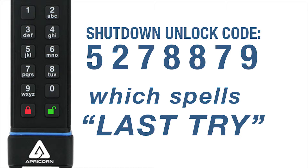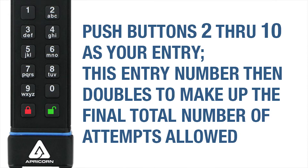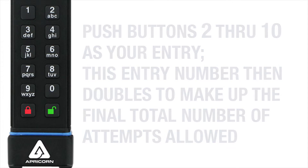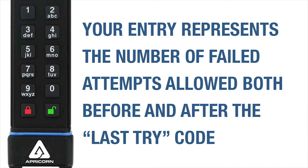When programming the limit number of brute force attempts, you'll be entering the numbers 2 through 10. Whatever number you enter doubles as your total number allowed, because what we're actually referring to is the number of attempts before and after the last try code.